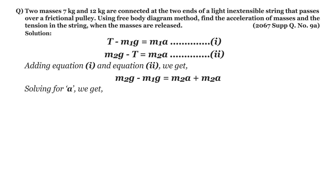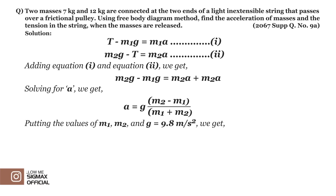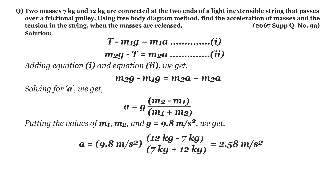Solving for 'a' we get: a = g(m2 − m1) / (m1 + m2). Substituting m1 = 7 kg, m2 = 12 kg, and g = 9.8 m/s², we get a = 2.58 m/s².